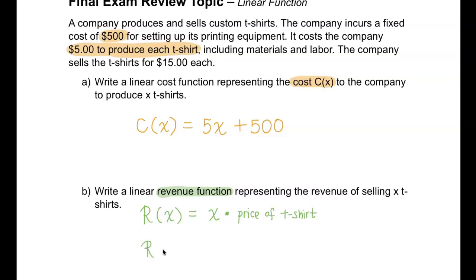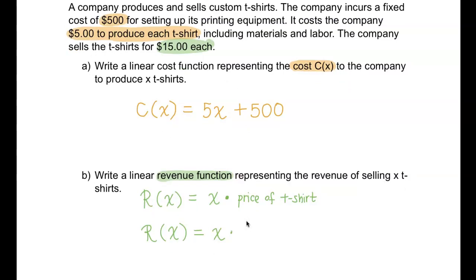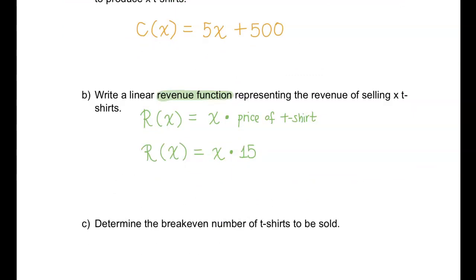The x represents however many t-shirts they're going to sell. They can sell 100, they can sell 1000. x will be an input variable. But I think they told us how expensive each t-shirt is when they are selling it: $15 each. So the revenue function will be x times $15. I'll just write it prettier as R of x equals 15x.